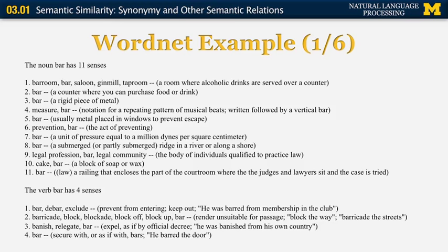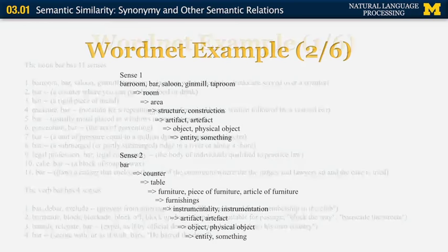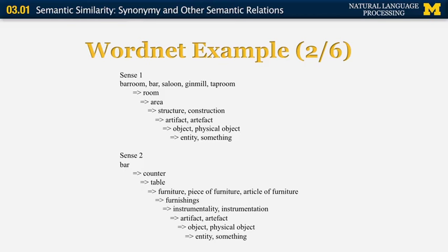The verb 'bar' also has four senses. The first is to exclude, as in 'he was barred from membership in the club.' The second sense is the same as barricade, block, blockade, block off, block up — meaning to render something unsuitable for passage, for example 'to barricade the streets.' In the first sense of bar as a noun, its closest hypernym is 'room,' then 'area,' then 'structure or construction,' then 'artifact,' then 'object,' then 'entity.' Entity is one of the root categories in the WordNet hierarchy.